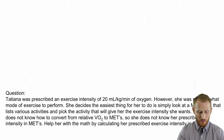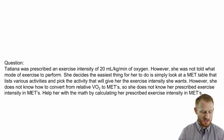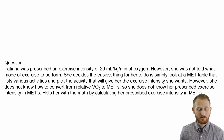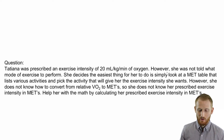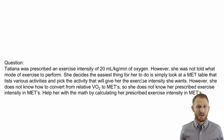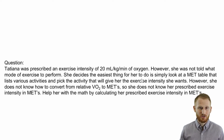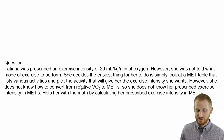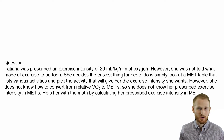Let's start with a question to help frame all of this. Tatiana was prescribed an exercise intensity of 20 milliliters of oxygen per kilogram of body mass per minute — that's in relative VO2 terms. However, she was not told what mode of exercise to perform. She decides the easiest thing to do would be to simply look at a MET table, which is a table that gives a list of activities and how hard each activity is in units of METs, which is an oxygen consumption unit. From that table, she's going to pick an activity at the exercise intensity she wants, something she would enjoy, and that's what she'll do.